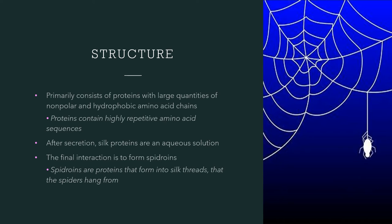The proteins then pass through the spinning duct and have a final interaction to form into silk threads or spydrones. Spydrones are proteins that form the majority of the spider silk fibers and are made up of large repetitive proteins. These repetitive sequences build the toughness and strength of the fibers.